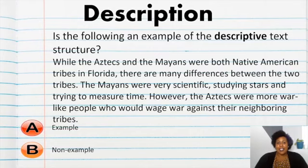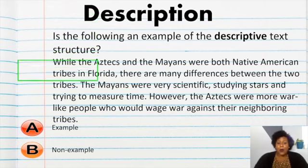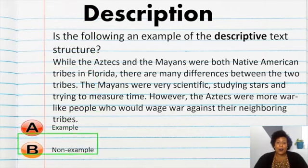Now, let's practice. Is the following an example of the descriptive text structure? While the Aztecs and the Mayans were both Native American tribes in Florida, there are many differences between the two tribes. The Mayans were very scientific setting stars and trying to measure time. However, the Aztecs were more warlike people who would wage war against their neighboring tribes. Is that descriptive text? Well, if you said that is a non-example, you are right. The words that I focused on were differences. So, that shows me that this is a compare and contrast text structure. Good job.